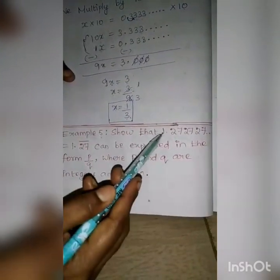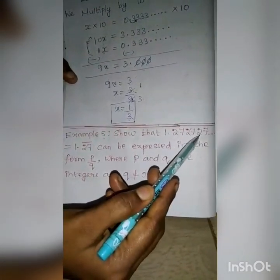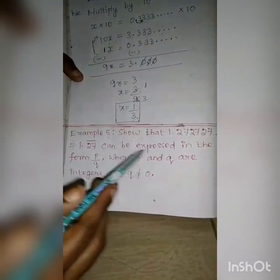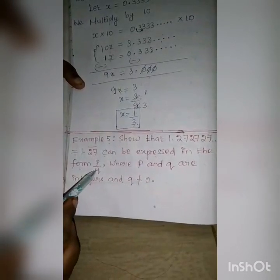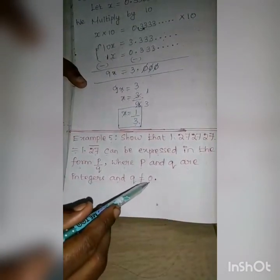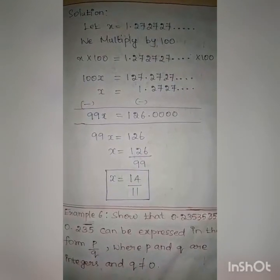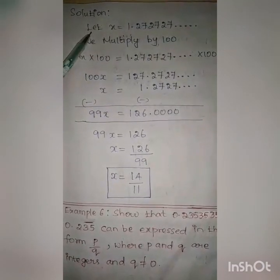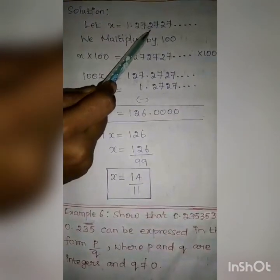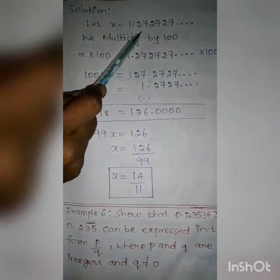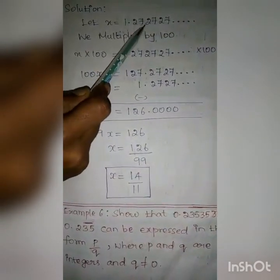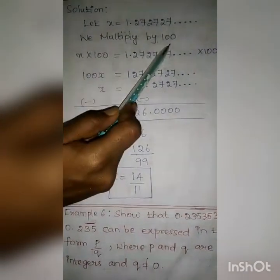Example 5. Show that 1.272727 etc., equal to 1.27 bar, can be expressed in the form P by Q, where P and Q are integers and Q not equal to 0. Solution. Let us take the given question as X. That is, X equal to 1.272727 etc. Here, how many numbers are repeated after the point? Two numbers are repeated — that is, 27 is repeated. So we multiply by 100.